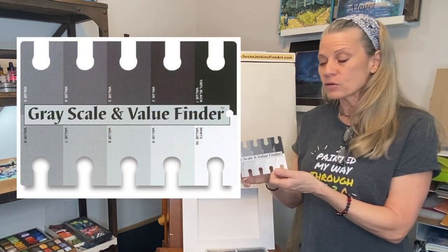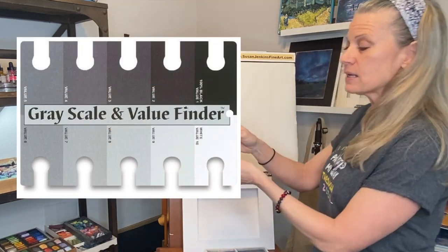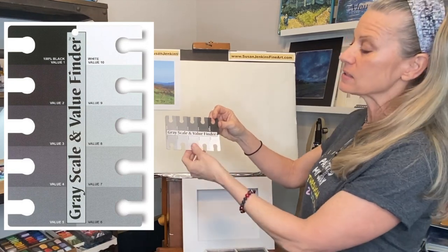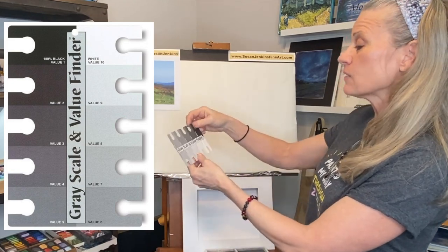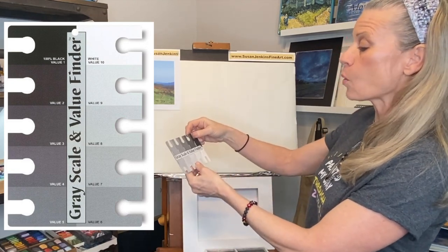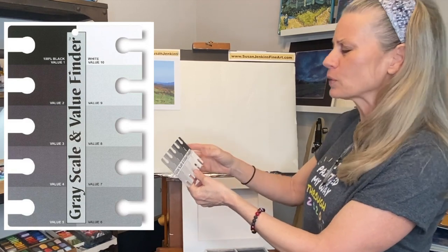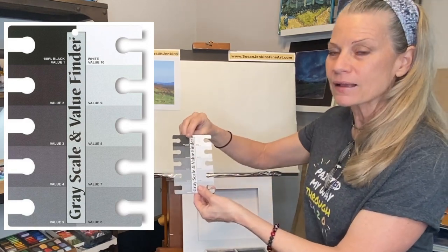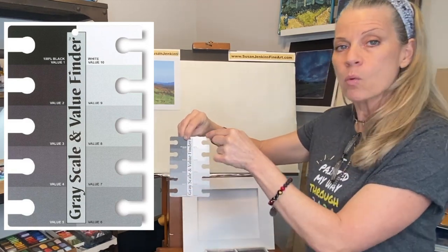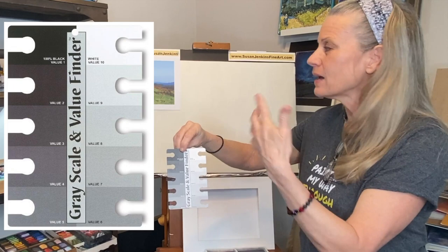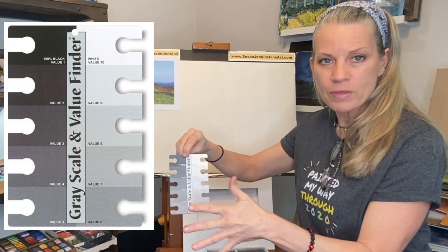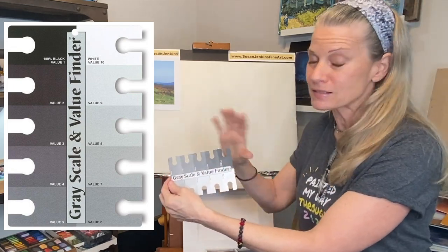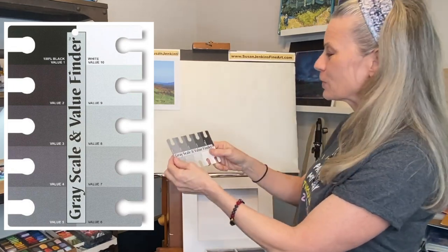On the grayscale value finder, you can see it's breaking things down into 10 different values — one being black and 10 being white. You don't need to know that for this lesson, but it's interesting that it's kind of backwards from what you might think.